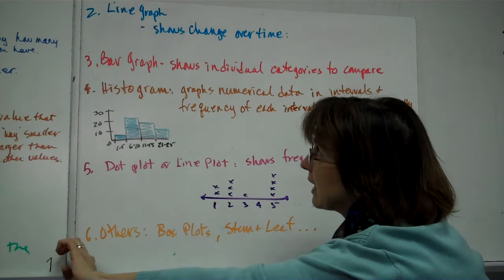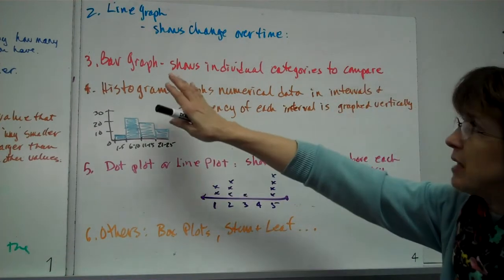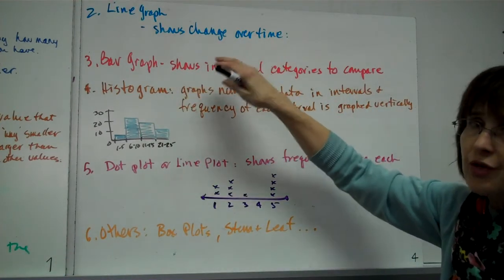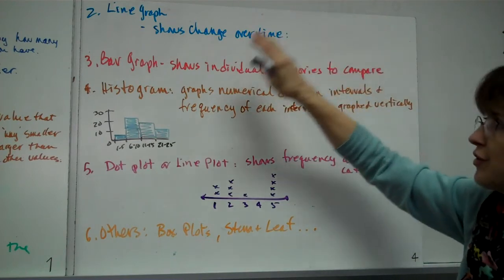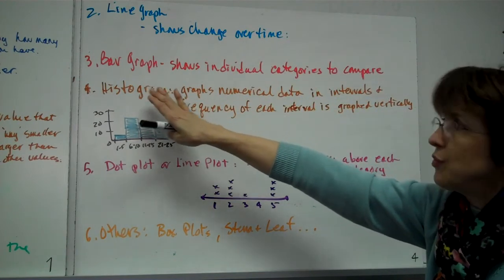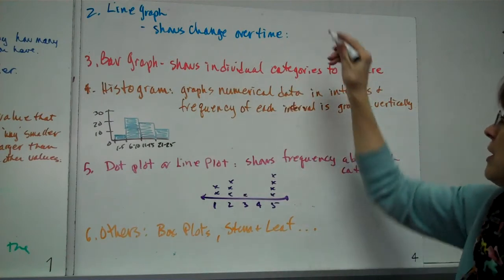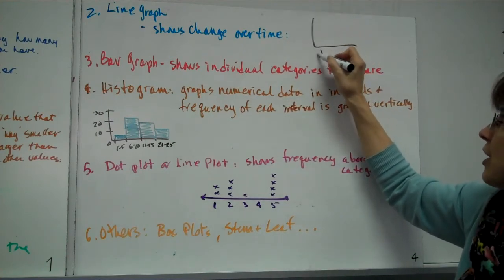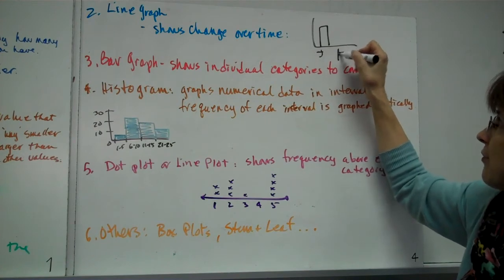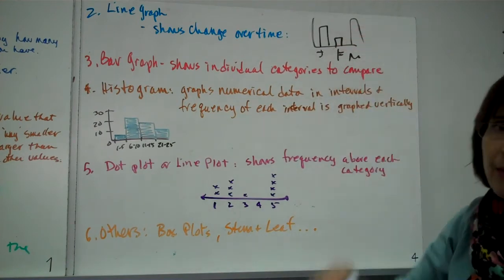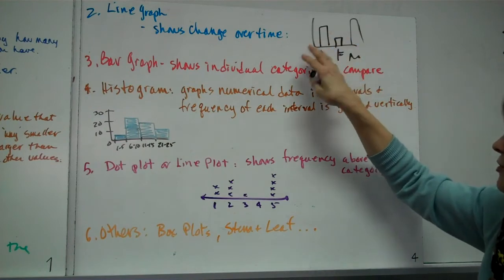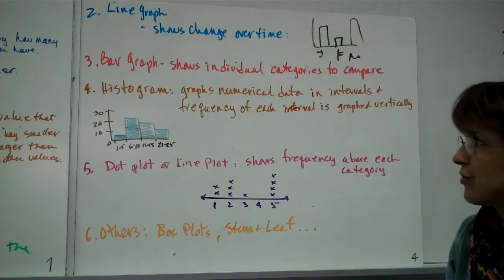Another way to organize data is a line graph, which you've done many times. And that shows change over time. Usually it's time on the bottom, and it has the change. Okay, bar graph, you've done two. And that shows individual categories to compare, like how many people have their birthdays in January, and that's a bar. And how many people have it in February, and that's a bar. And then March, you know, you kind of maybe did that in elementary school with favorite ice cream flavors or something.